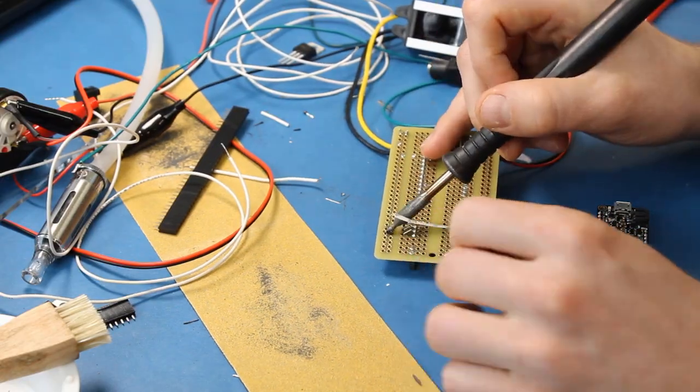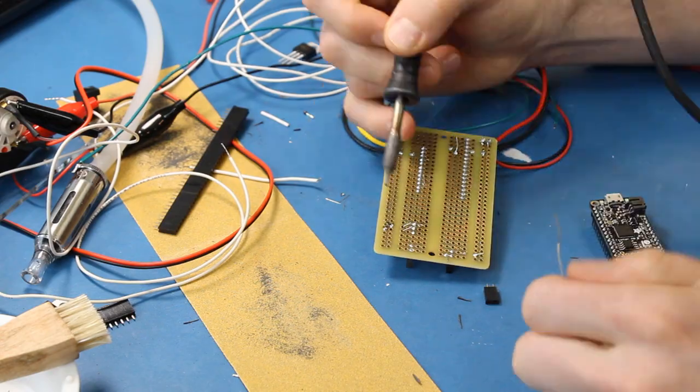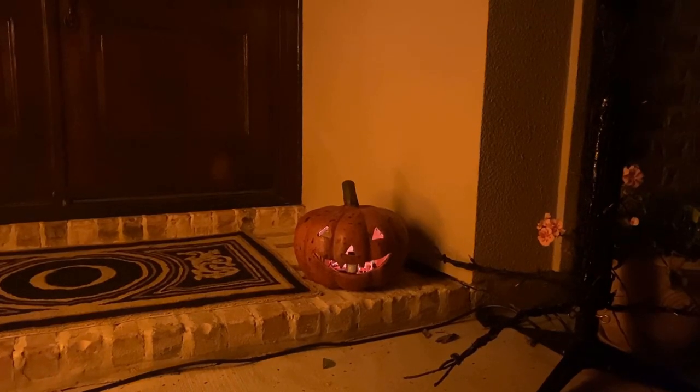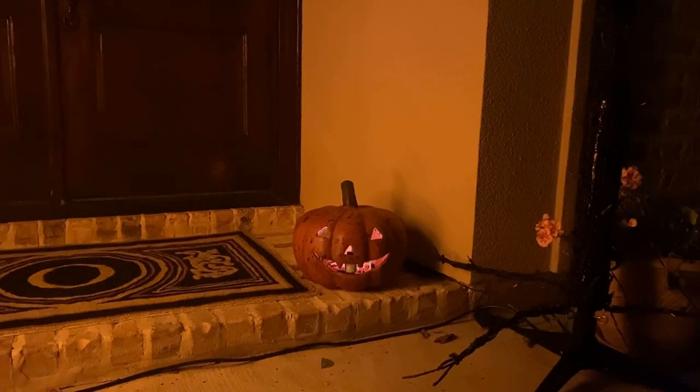I found that solderable breadboards are my favorite way to make some of these projects a little more permanent. The other thing I did was added a NeoPixel stick so that I could create a fire flicker effect. This made it look like the jack-o'-lantern had a candle inside of it.